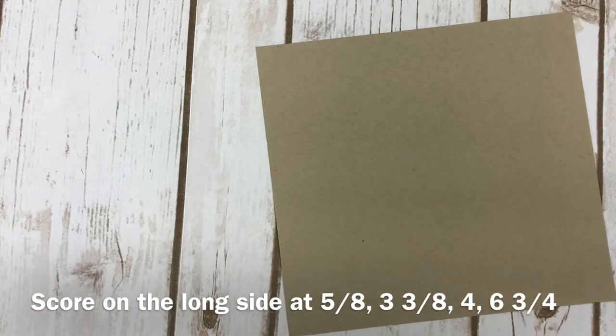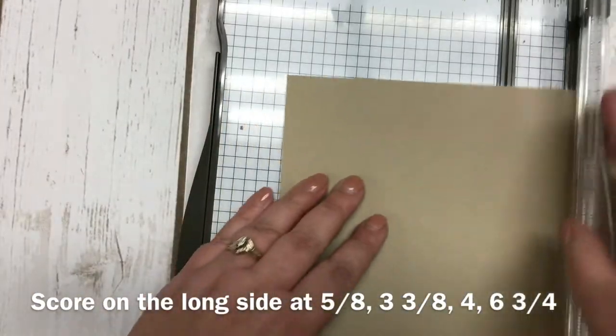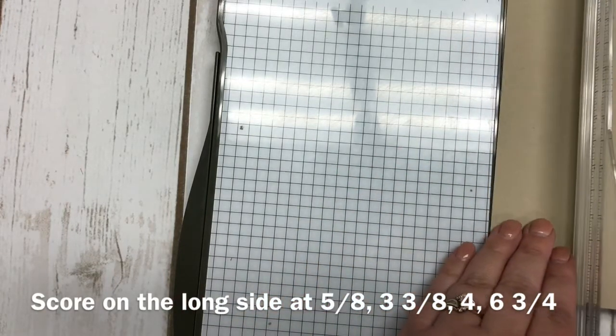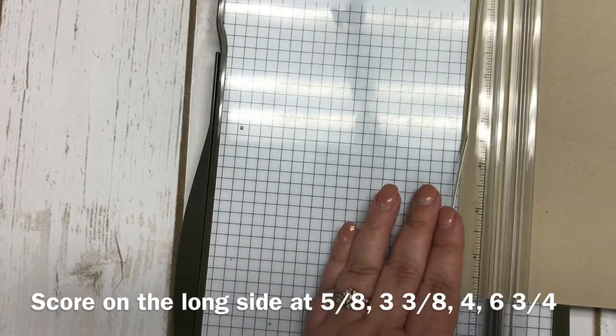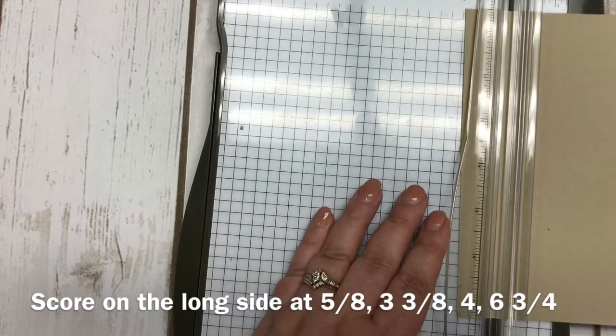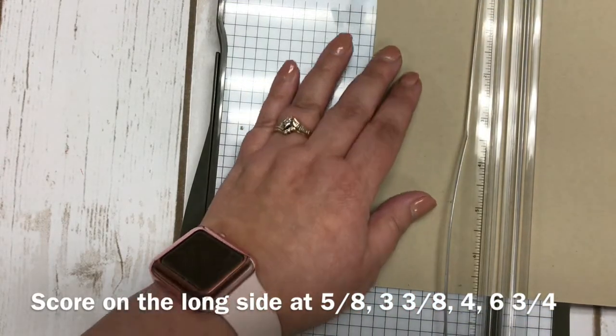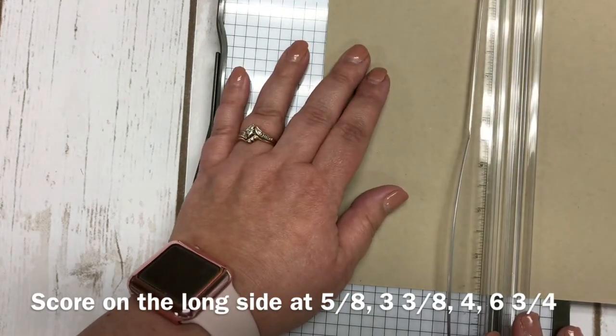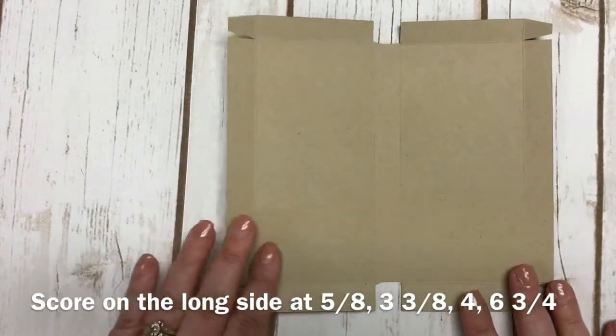Let me bring my trimmer in here and show you the scoring. On the long side, 7 3/8 side, we are going to be scoring at 5/8. Now keep in mind that the 5/8—every little two lines is an eighth. That's a good way to remember this. You're going to be scoring at 5/8 and then again at 3 3/8. I'm not going to actually be scoring this one because I have one done. Again at 4 and then again at 6 3/4.